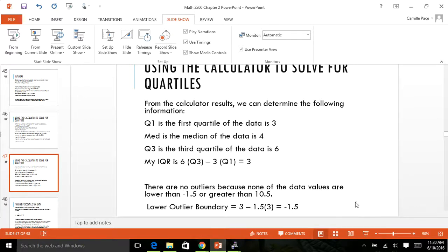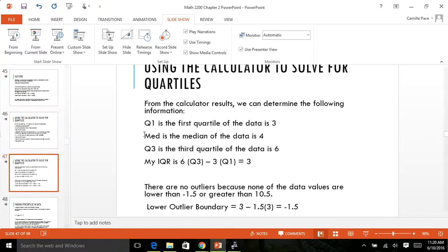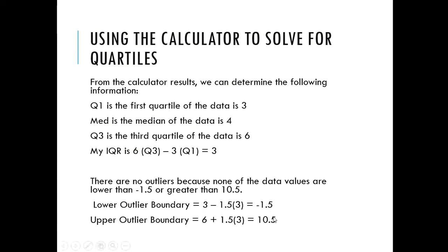So I want to know for my lower values, is there any data set less than negative 1.5? Because I did the formula: three minus 1.5 times three equals negative 1.5. Going back to that original data set, there is no values below 1. So what I'm going to do now, let me type on this one.